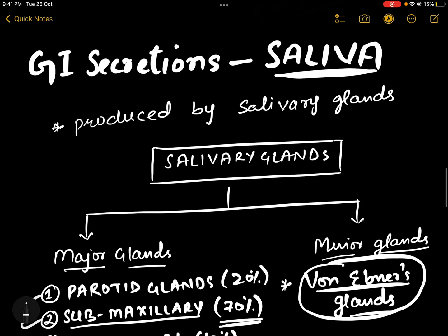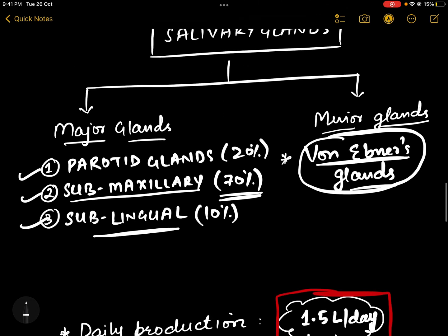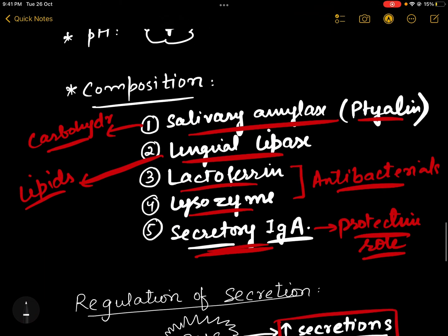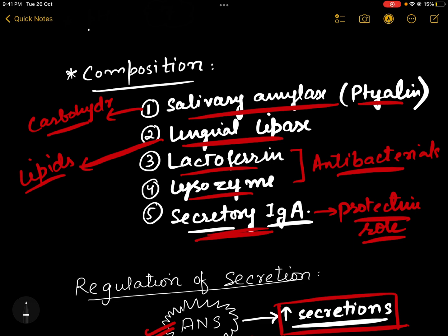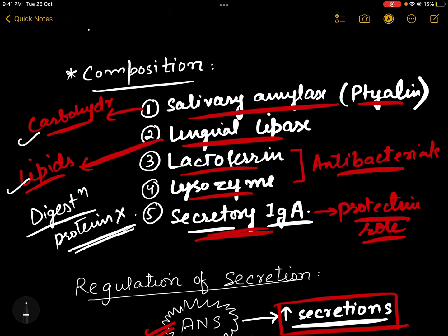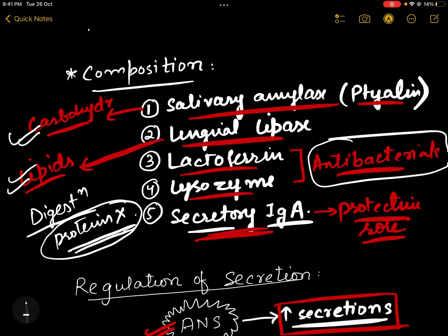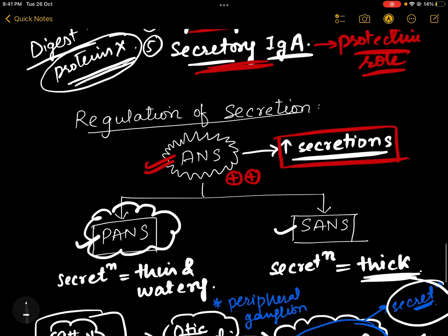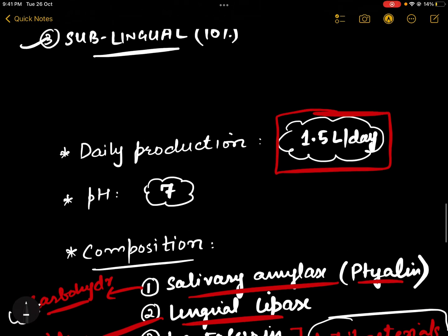To summarize: saliva is produced by major and minor glands, with a daily production of 1.5 liters. Based on its composition, saliva performs digestion of carbohydrates and lipids, but there is no digestion of proteins — protein digestion starts in the stomach, whereas carbohydrate and lipid digestion starts in the mouth. Lactoferrin, lysozyme, and secretory IgA have protective and antibacterial roles.